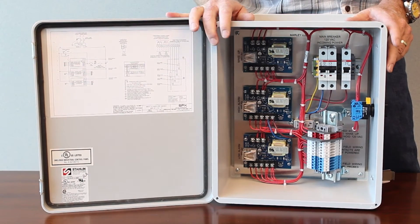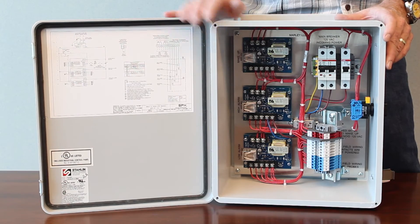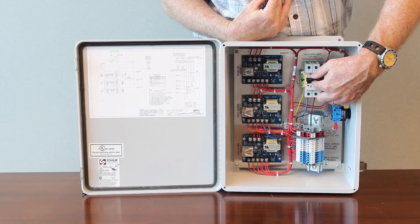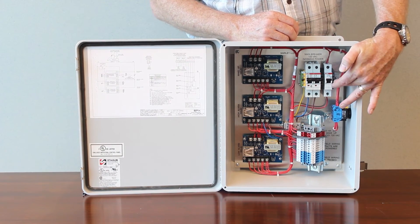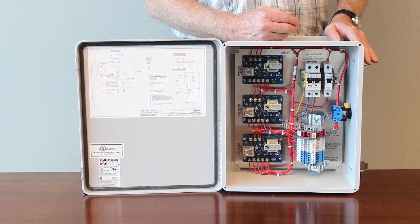This is a 120 volt single phase 60 and 50 cycle control panel. Inside here we have a main circuit breaker that is rated at 6 amps. So this panel requires 6 amps of power. There's also another circuit breaker in here and we'll talk about that a little bit later which feeds power to your solenoid.